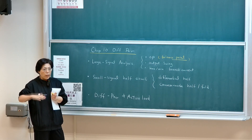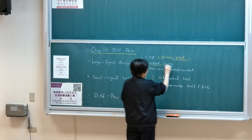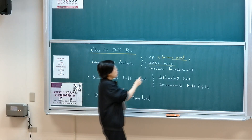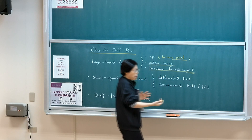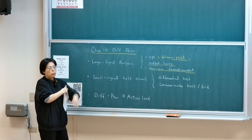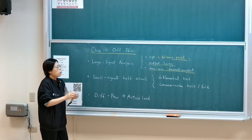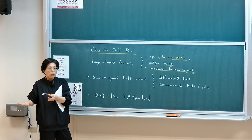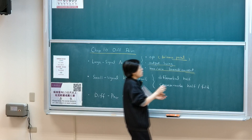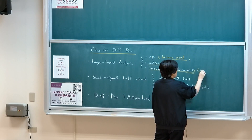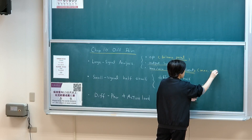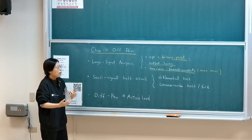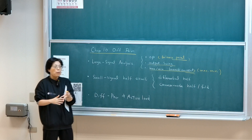We talked about swinging to the maximum — what is the output swing? The characteristic shifts toward one direction or the other. You need to understand the maximum branch current at each biasing point or extreme. When you exceed the linear regime and reach saturation, what are the branch currents — the maximum or minimum? One should understand the large signal behavior of a differential pair in terms of biasing voltage and biasing current.